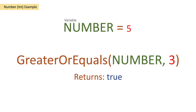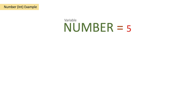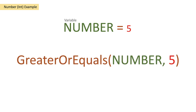So let's take a look at this comparing 5 to 5. We've still got our variable number of 5. We're going to pass it into our greater or equals function, but we're also going to pass in the number of 5. So we're saying, is 5 greater than or equal to 5? Well, it's equal to 5 so we get a return of true. It's not greater than but it is equal to.